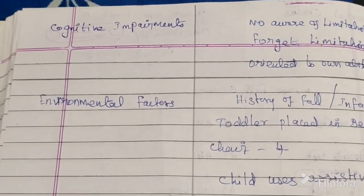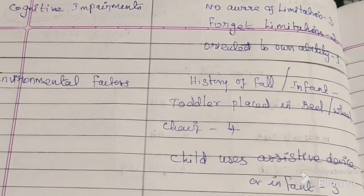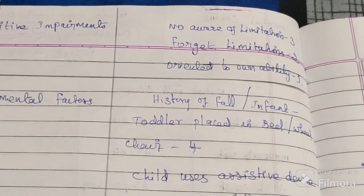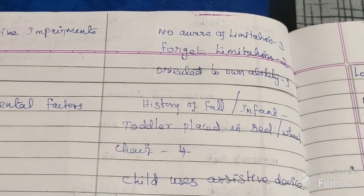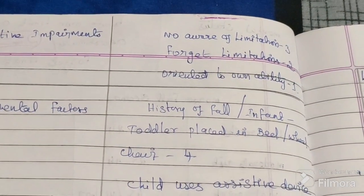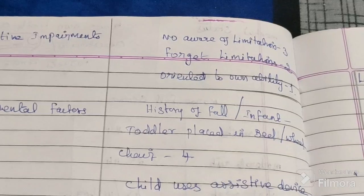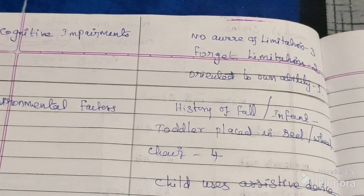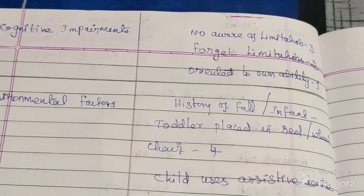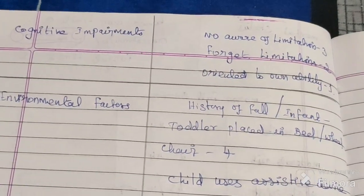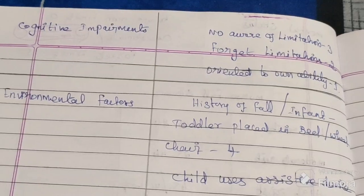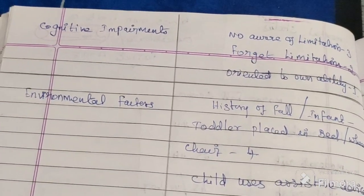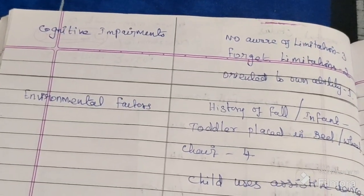The fifth variable is environmental factor. If there is any history of falls, or if it is an infant placed in a bed or wheelchair, give a score of 4. If the child uses any assistive device or is an infant, give a score of 3. If the child is placed in a bed, give a score of 2. If the patient is in an outpatient area, give a score of 1.